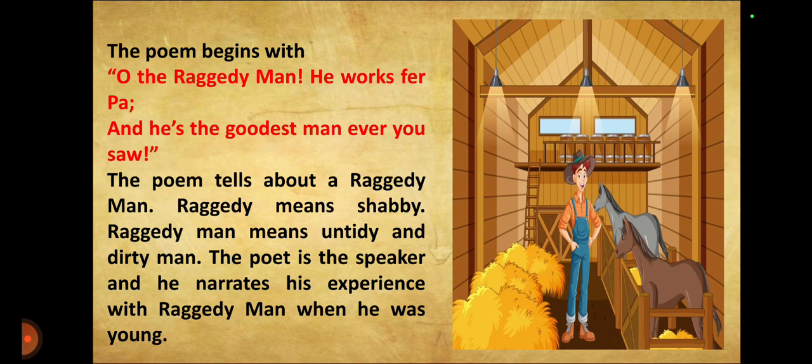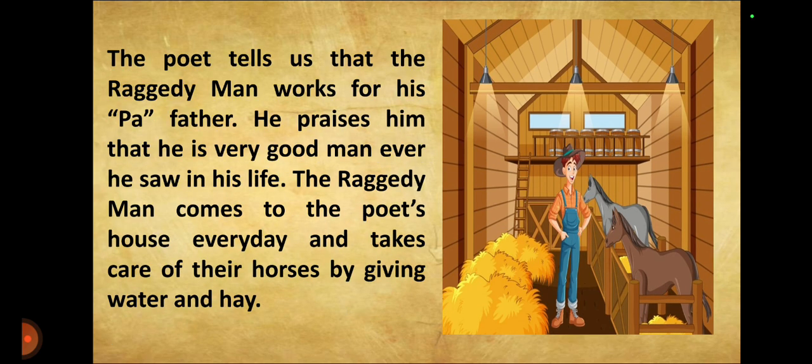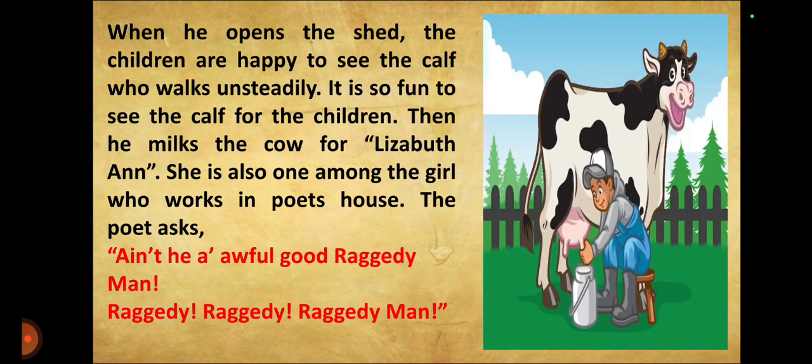The poet is the speaker and he narrates his experience with the Raggedy man when he was young. The poet tells us that the Raggedy man works for his father. He praises him as the best man he ever saw in his life. He comes to the poet's house every day and takes care of the house by giving water and hay.